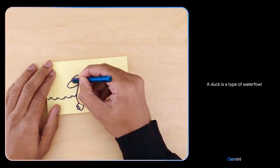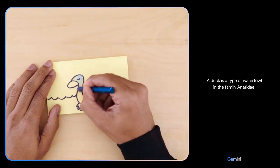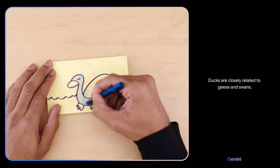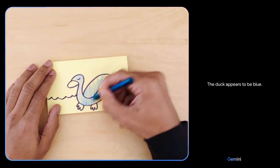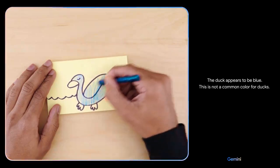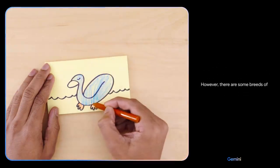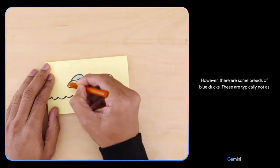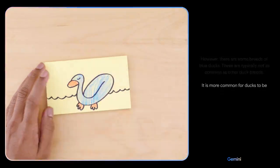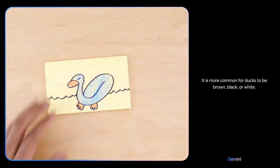A duck is a type of waterfowl in the family Anatidae. Ducks are closely related to geese and swans. The duck appears to be blue. This is not a common color for ducks. However, there are some breeds of blue ducks. These are typically not as common as other duck breeds. It is more common for ducks to be brown, black or white.